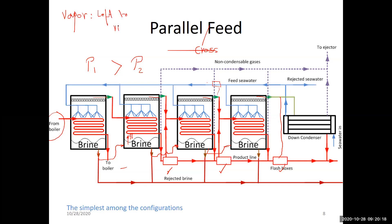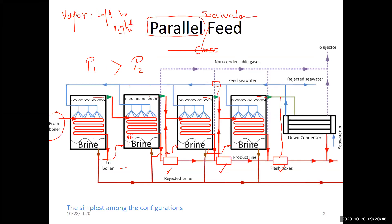So the classification — forward, backward, parallel, or parallel cross — refers to the direction of seawater flow, not steam flow. Steam always goes from left to right. The seawater either goes all to the first effect (forward), all to the last effect (backward), or is distributed equally across all effects (parallel). Remember that: the classification is about how the seawater flows after leaving the condenser.